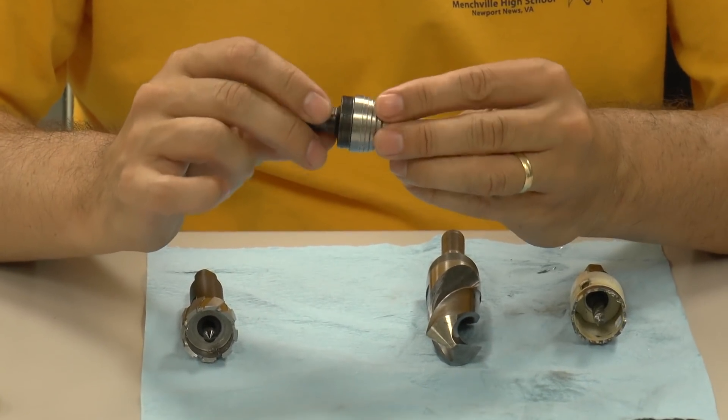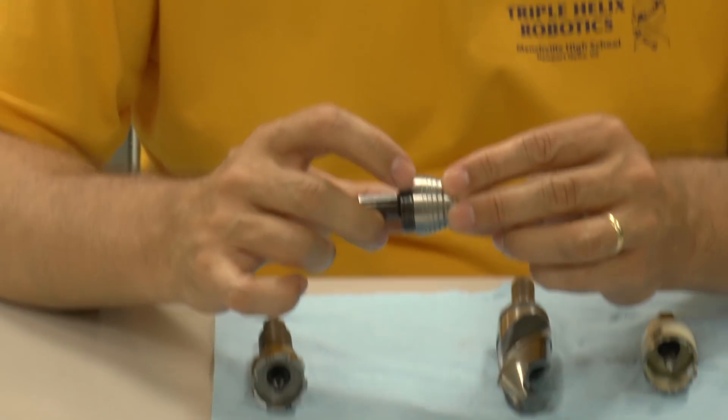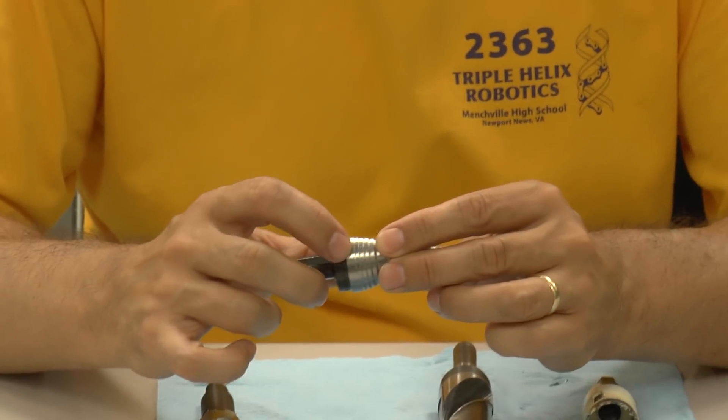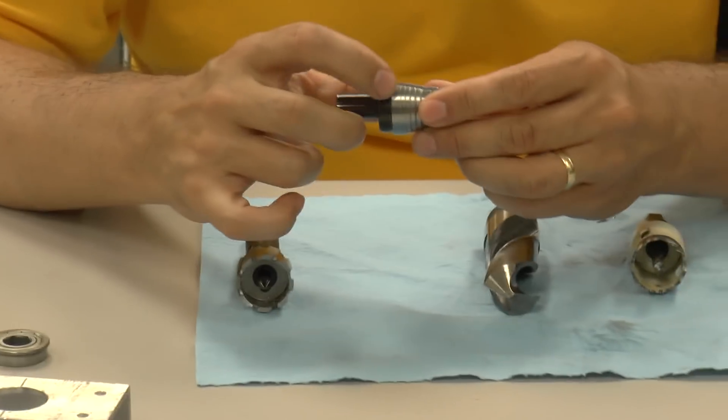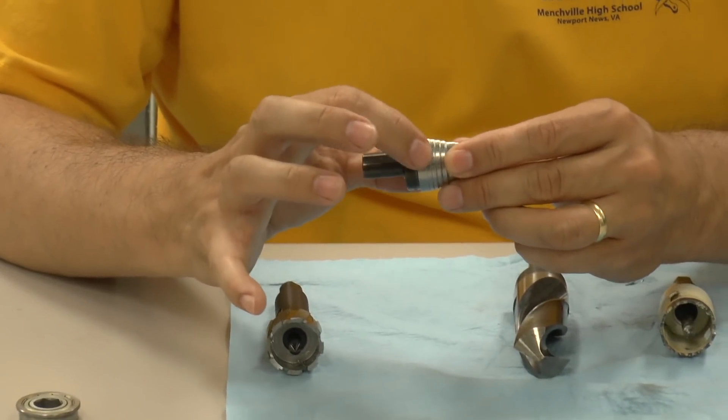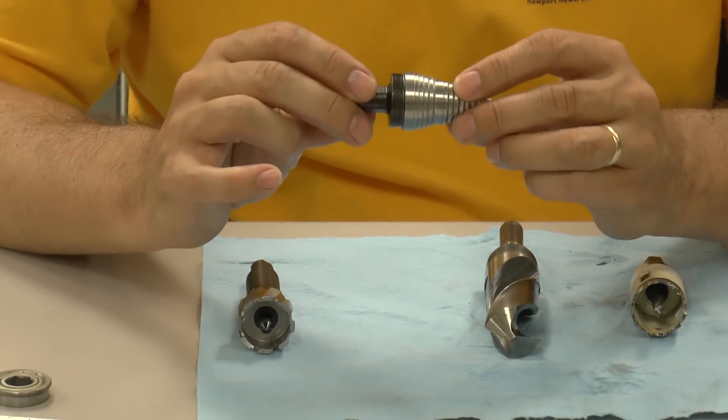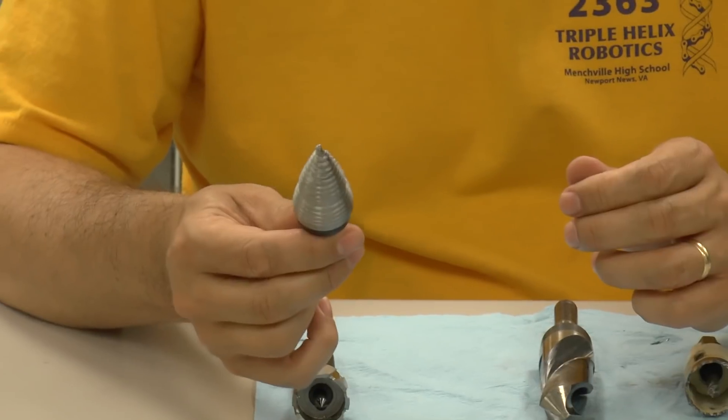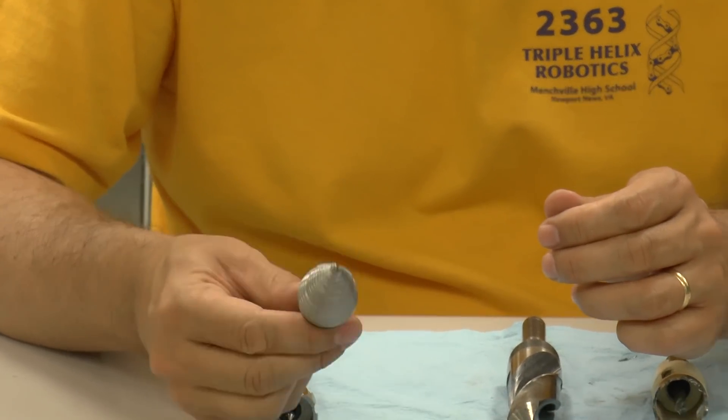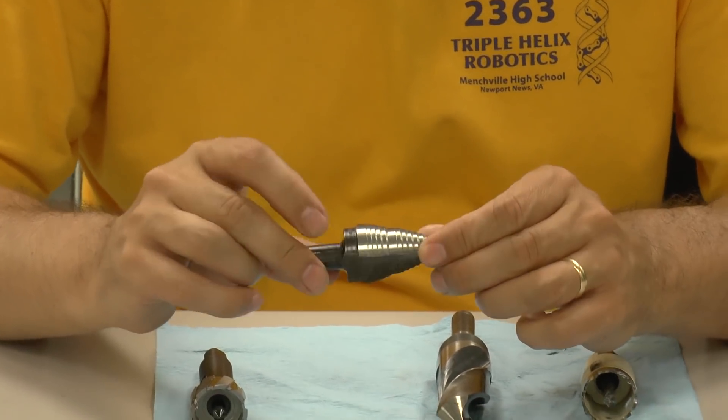And we think that the one that we have, we put on our lathe and either polished it by hand or we sent it out and had somebody else grind this outside diameter so that it would give you on-sized holes. And we don't want people to have to make modifications to the tools to get their good bearing holes.